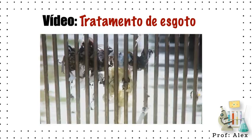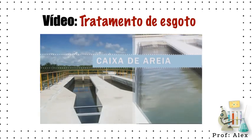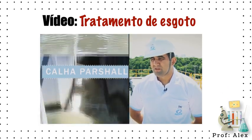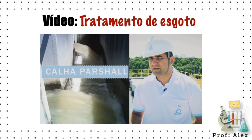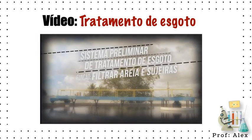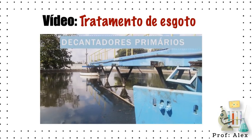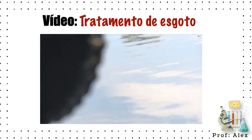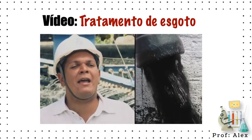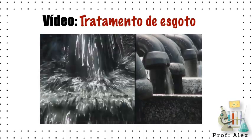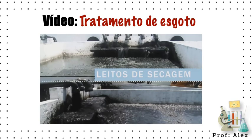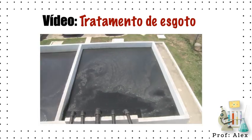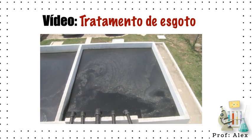The function of the screen is to retain the coarse waste before it reaches the downstream processes. The caixa de areia is a system for sand removal. It monitors the amount of sand entering the system. In the primary system, we have the primary decanters, which retain suspended material through a slow decantation process. This material is removed and sent to sludge treatment, which aims to reduce physical volume, remove humidity, and reduce pathogens such as viruses and bacteria.